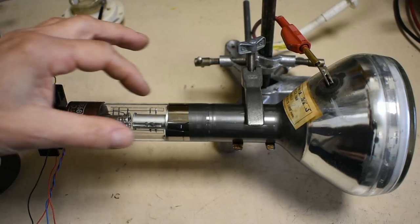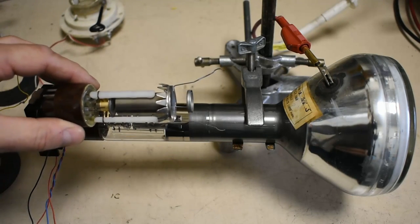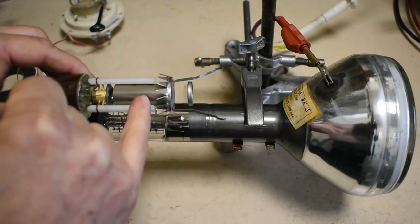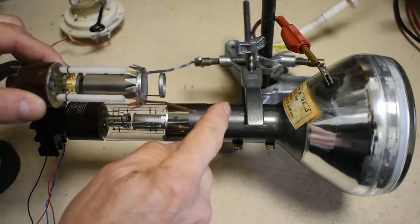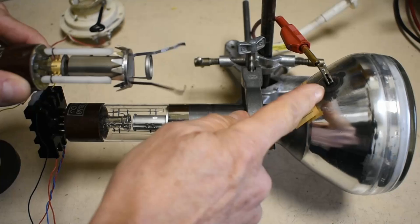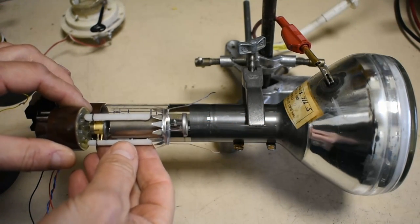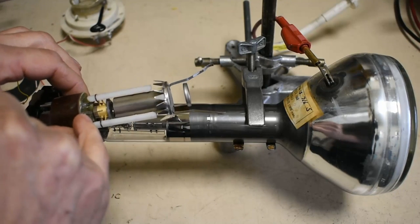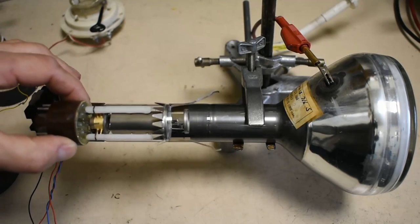So the electron gun sitting in here is very similar construction to this one. And you can see there's the final anode here and this connects by these springs to the internal coating onto the final anode connection up here. So that'd be the same arrangement inside here. And our cathode and heater are at this end. But this one needed external focusing.